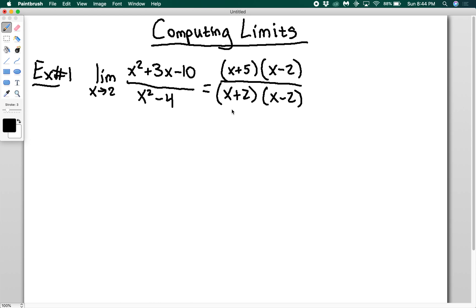Good thing I don't care because it doesn't exist. I want to know what is it getting closer to at x equals 2. So here I'm actually going to cancel these out and I have x plus 5 over x plus 2. Technically I should still have the little limit as x goes to 2 out front here.